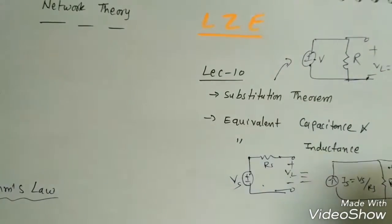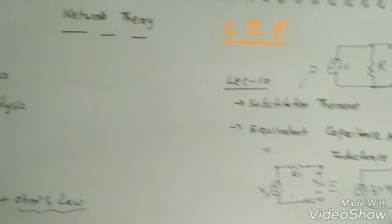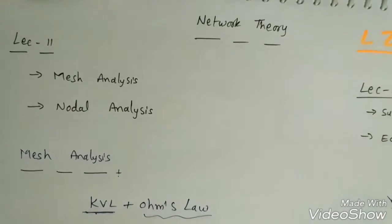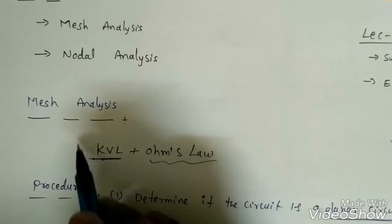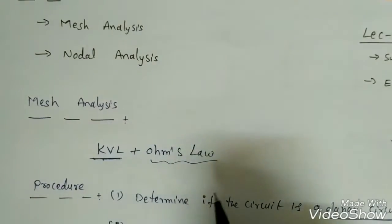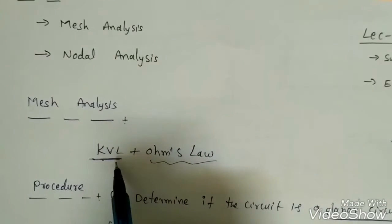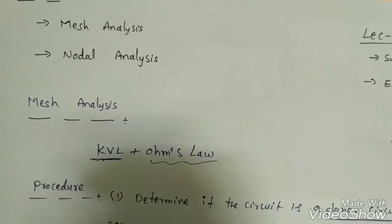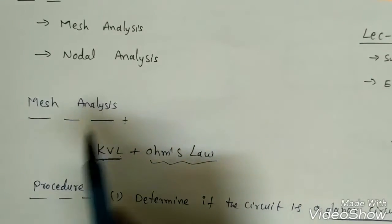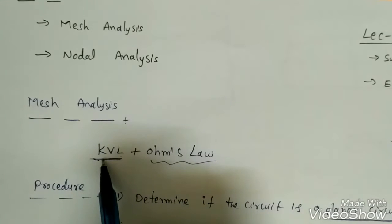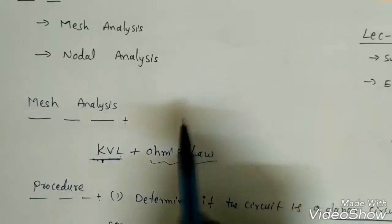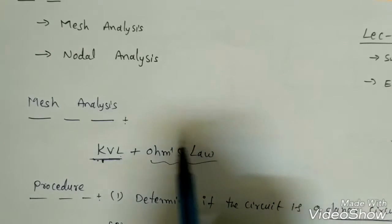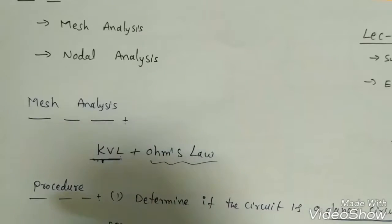Now we will see mesh analysis. Whenever we do mesh analysis, we have to use two laws: Kirchhoff's Voltage Law (KVL) and Ohm's Law. When writing a mesh equation, we first write KVL, then from each passive element — resistance, capacitance, or inductance — we apply Ohm's Law.